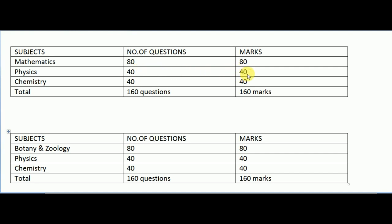Coming to Physics, there will be 40 number of questions and each question carries one mark, so 40 questions and 40 marks. Coming to Chemistry, same as Physics — 40 questions and 40 marks. So totally the paper will contain 160 questions and 160 marks. To qualify in MSET 2021, you have to at least get 40 marks overall.